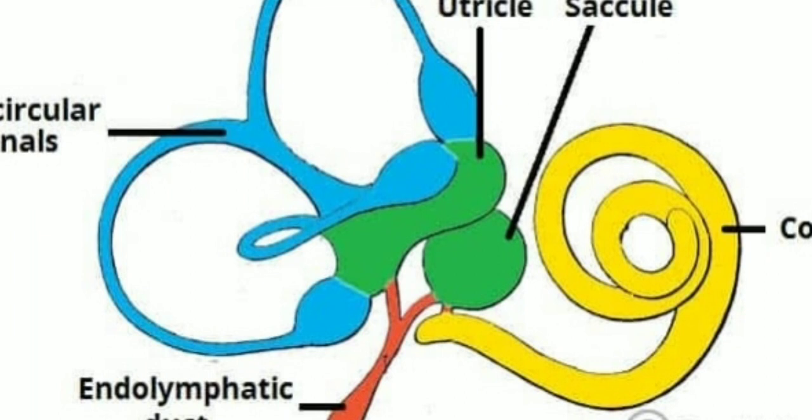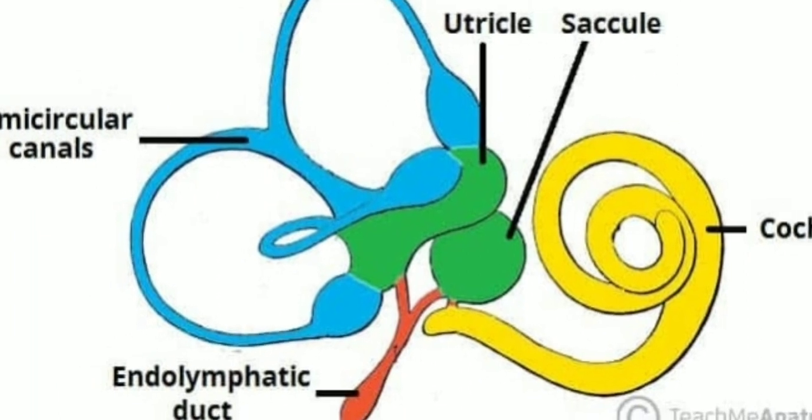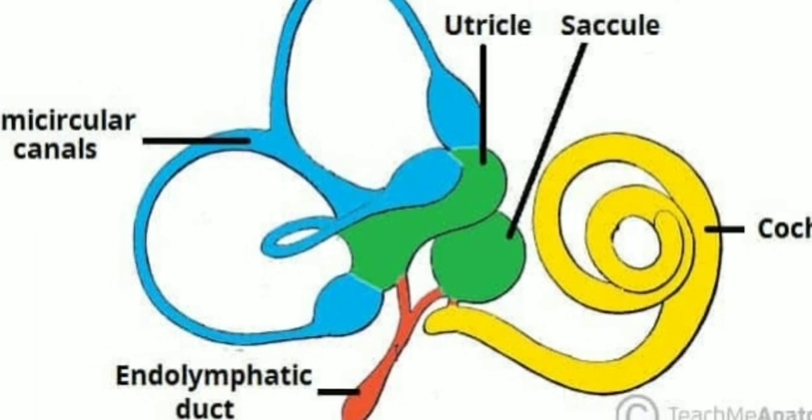From the utricle and saccule, there is a diverticulum-like tube called the endolymphatic duct and its sac.